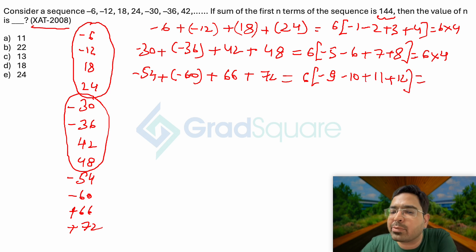Again, 11 plus 12 will be 23, 10 and 9 will give me minus 19. Minus 19 plus 23 will again give me 6 into 4. So I realize every set of 4 numbers that I am taking is going to give me 24 as the sum of these numbers.